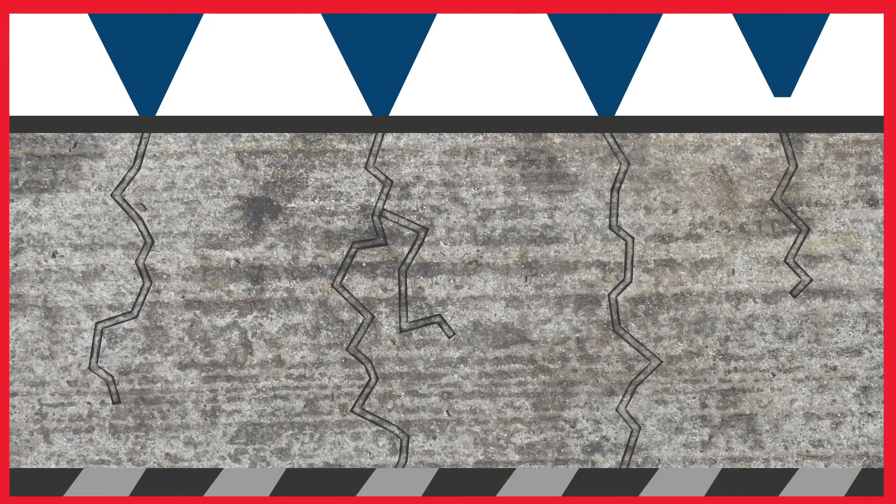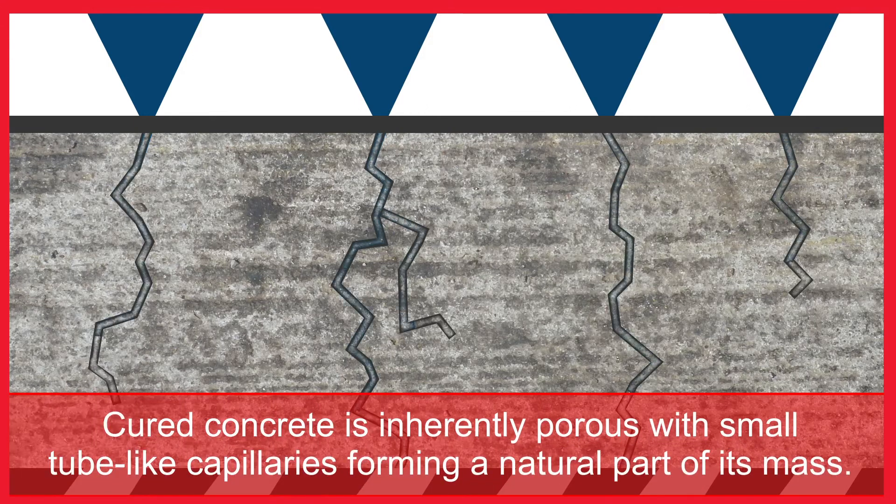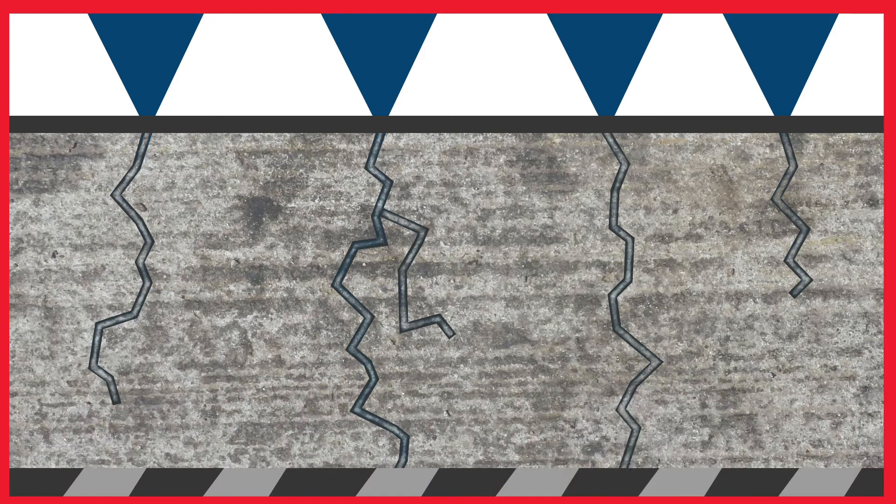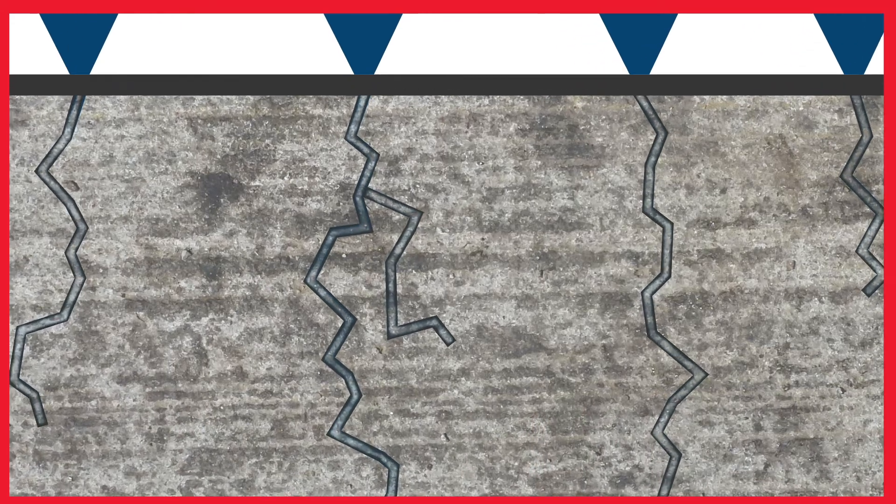When cured, concrete is inherently porous, with small tube-like capillaries forming a natural part of its mass. This allows water and other liquids to permeate into the surface of the concrete, which in time could cause the structure to weaken.